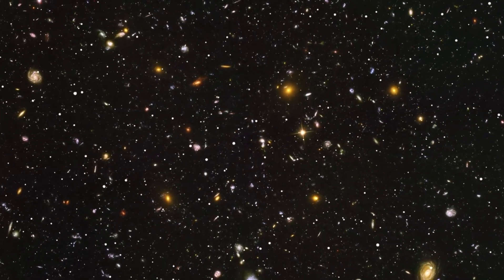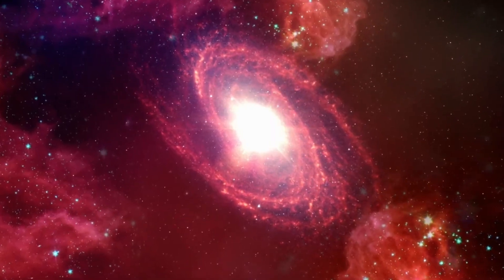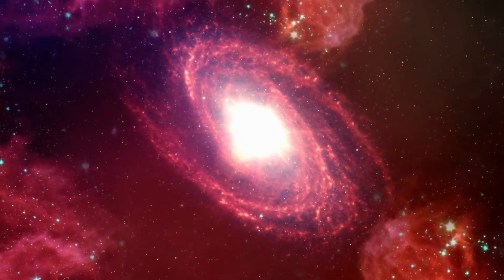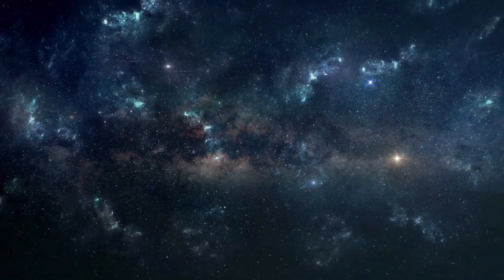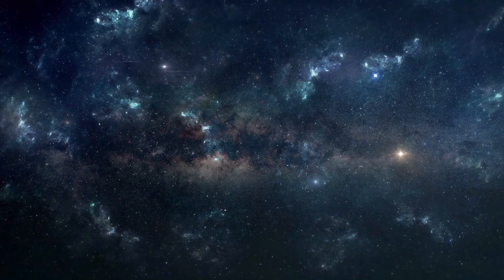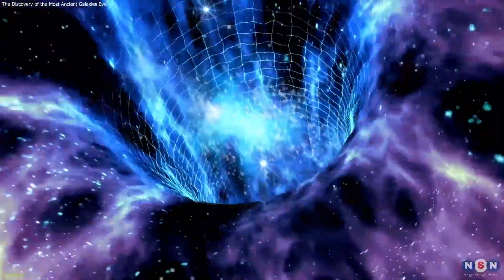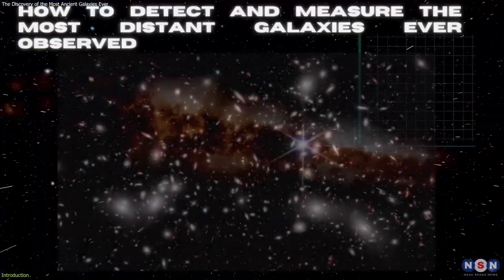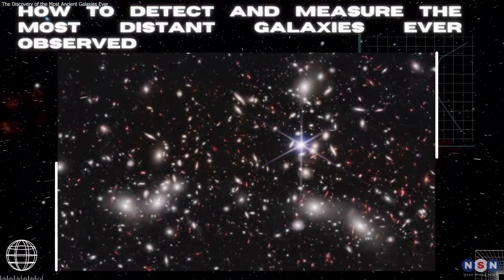Galaxies that are farther away have to cross more space, which is being stretched as it expands, before their light reaches us, and thus that light experiences more redshift. Redshift, denoted as z, can therefore be used to measure the distance to celestial objects with a known spectrum. Because light takes a finite amount of time to travel, this distance can be used to calculate how long ago these galaxies existed as we see them.